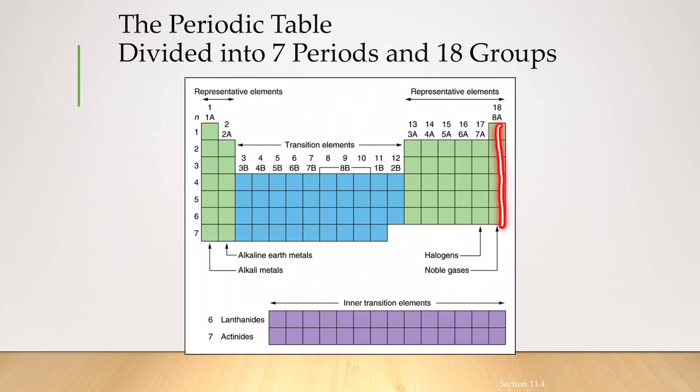And the last column is actually the noble gases, such as helium, neon, argon, and xenon. And then you have the halogens.